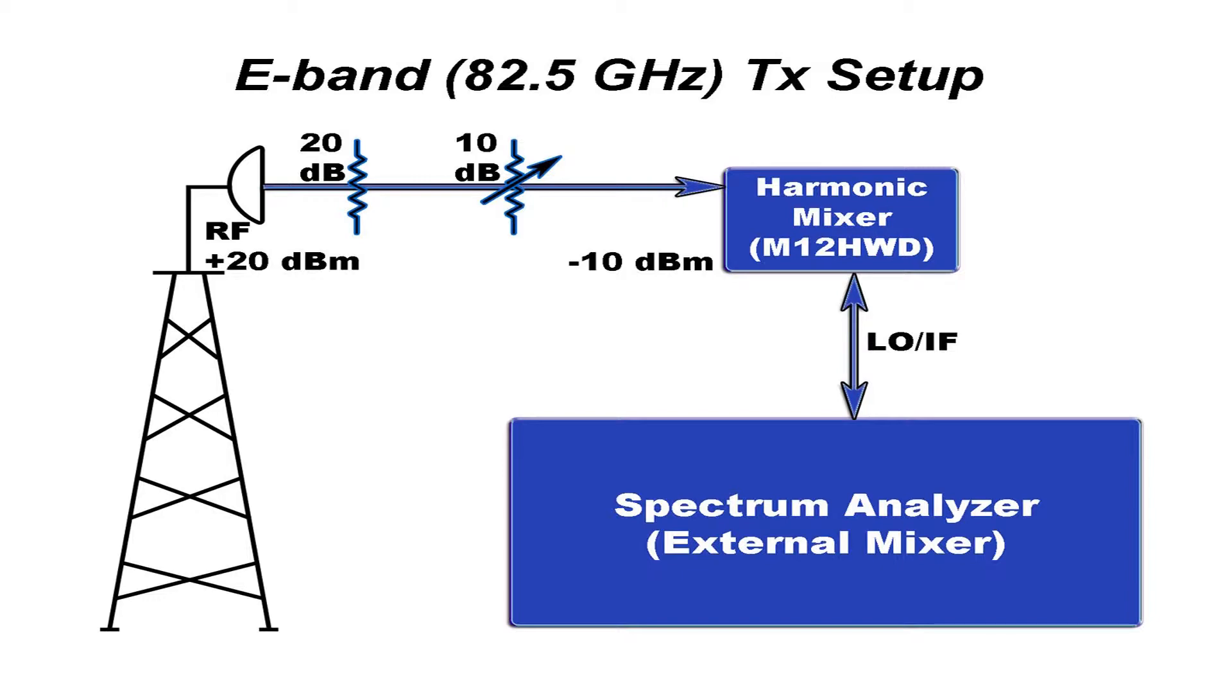In this way, we're able to look at the transmitter modulated output, which in this case has 1.4 GHz of bandwidth.